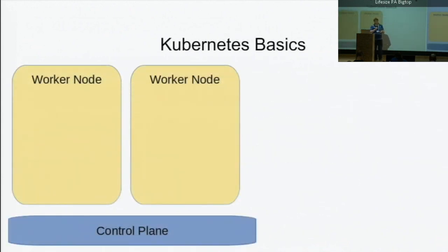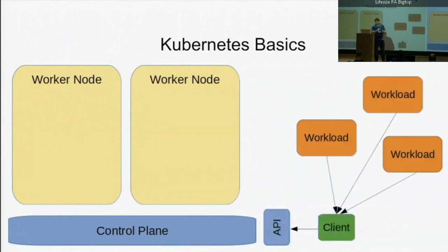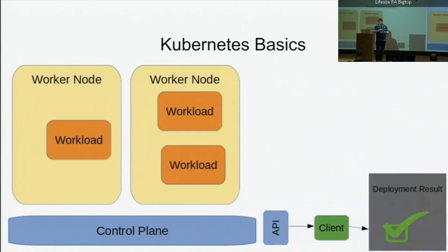So, Kubernetes basics. How does it work? It's a control plane, and you get a couple of worker nodes. It's a simple kind of distributed workload concept. You give it a workload. You talk to the API and say, here, I have this workload to do, will you go do it? It distributes the workload. It comes back with a result saying, yeah, I deployed that. That's all good. It works.